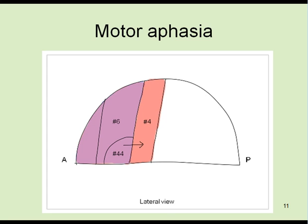When area 44 is affected, plans of movement of mouth cannot be conveyed to area 4. After all, a patient cannot speak appropriately though his or her mouth is not paralyzed. This situation is motor aphasia.